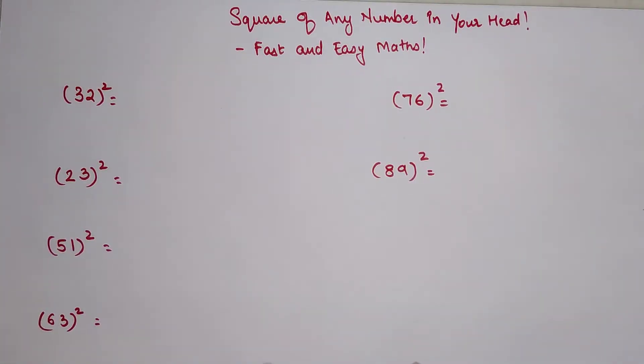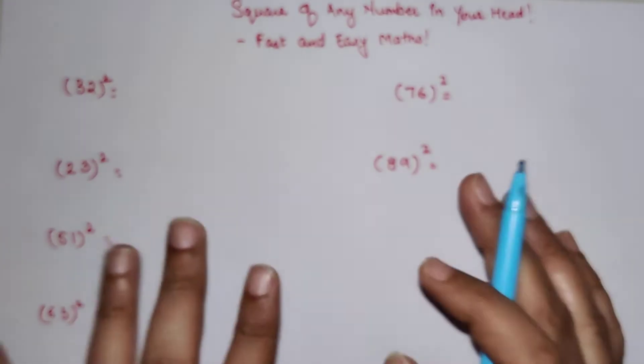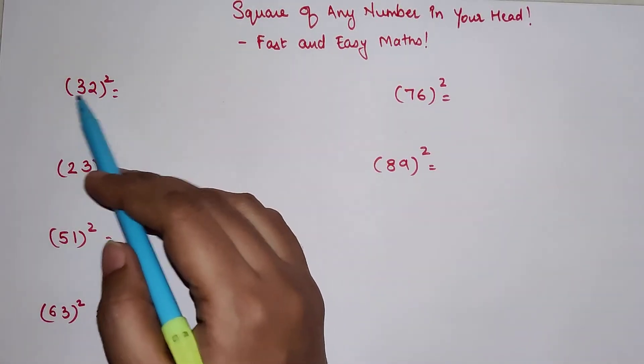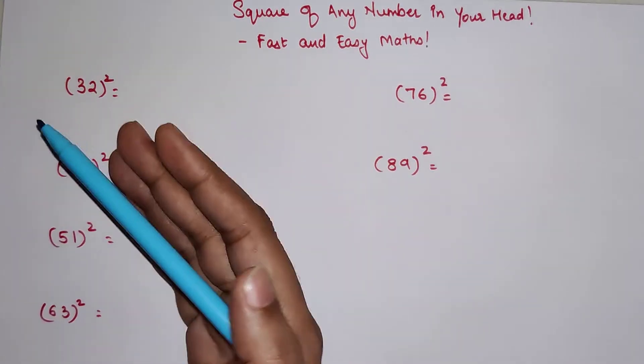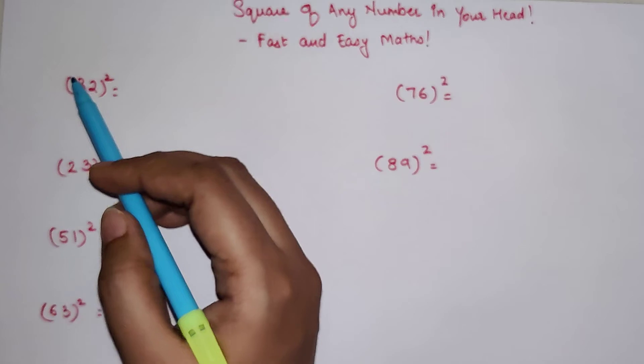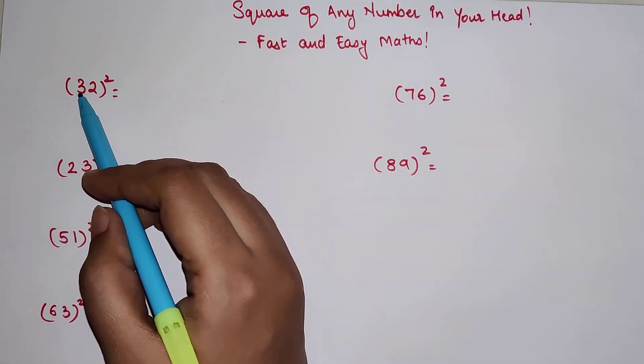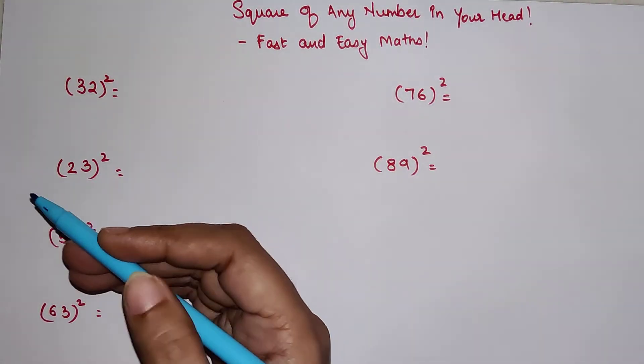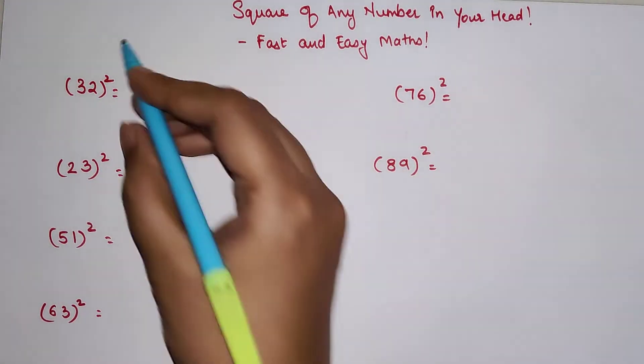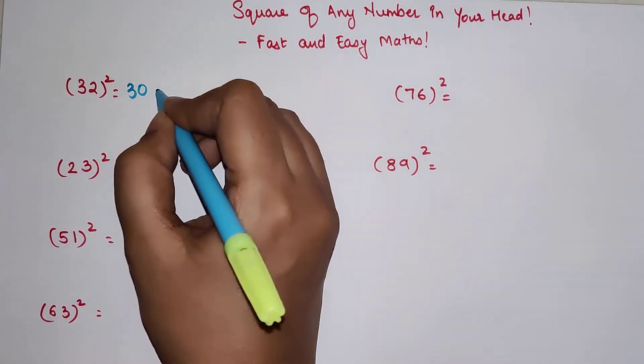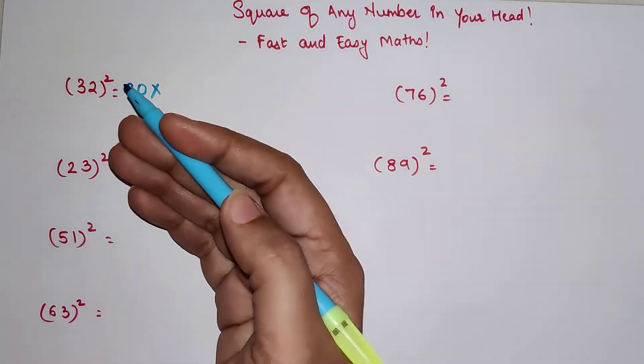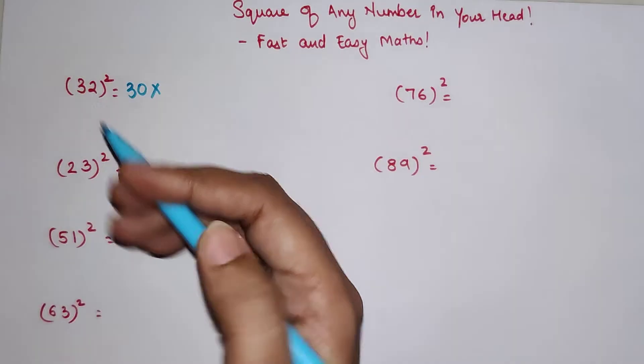The very first and very important thing you need to do is round this number to the closest tens in the decreasing order. So here, 32 is closer to 30, so we're going to write 30, and we reduced 32 by 2 to get to 30.